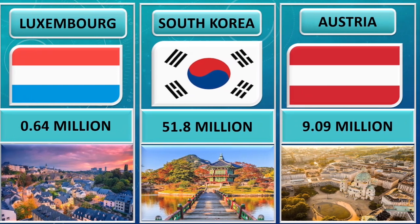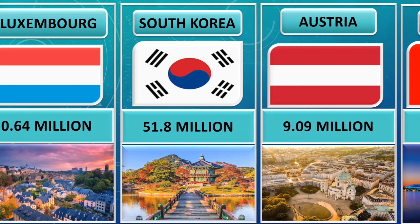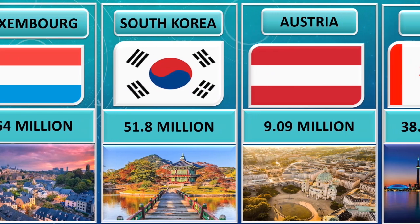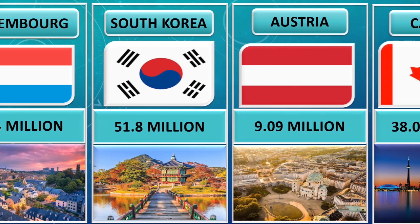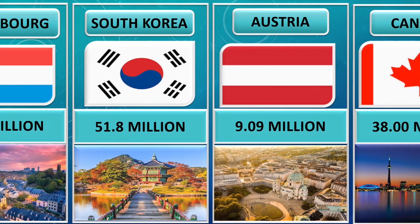Don't forget to like, share, comment, and subscribe. Population of Austria is 9.09 million.